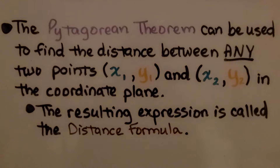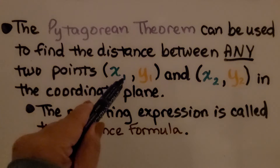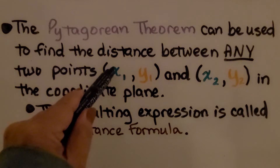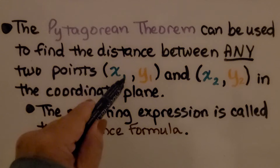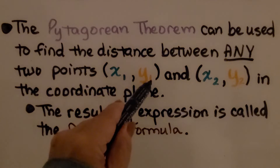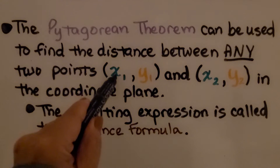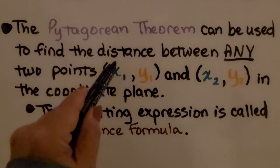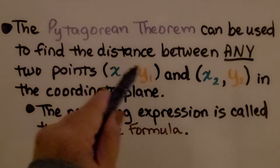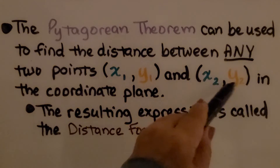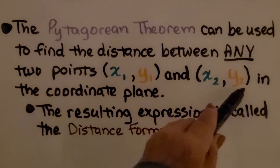These little numbers down here are called subscripts. We would read this as x subscript 1, or x sub 1, and this is y subscript 1, y sub 1, and it means the first point's x and y values. This would be the x and y values for the second point.